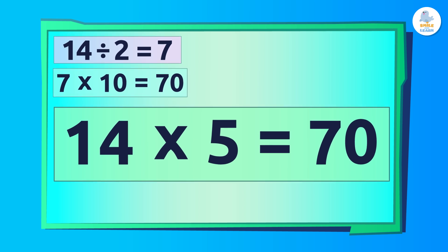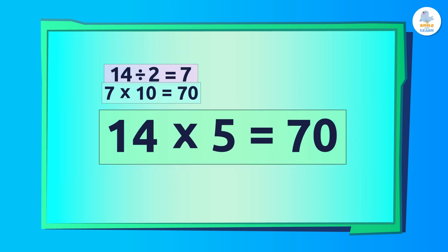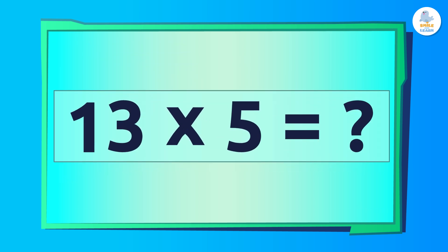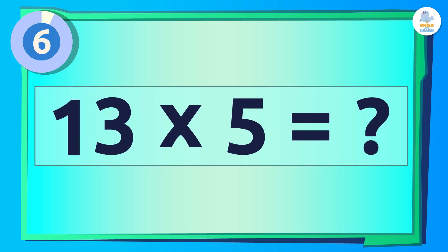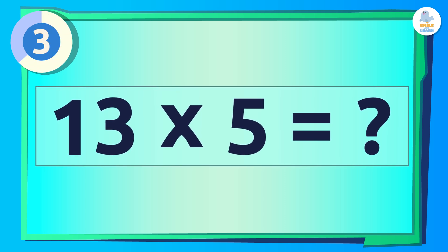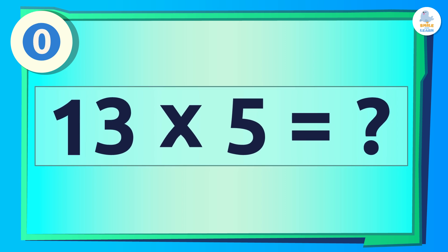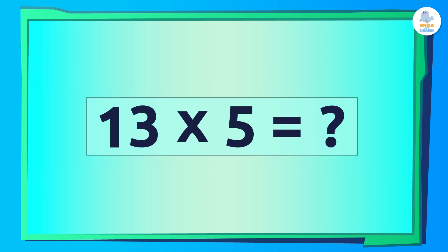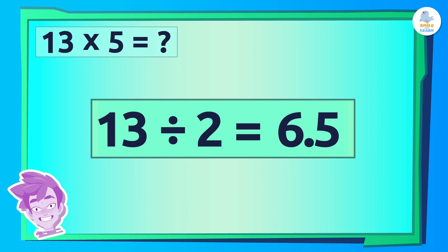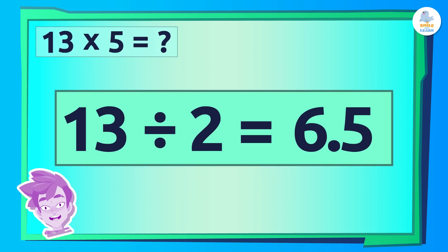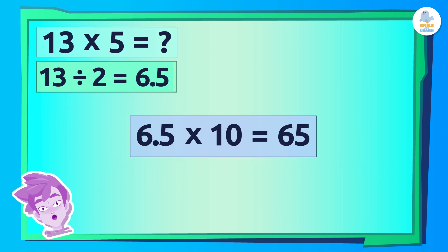Let's do the next one! What is 13 times 5? 65! Very good! We divide by 2 and then multiply by 10.